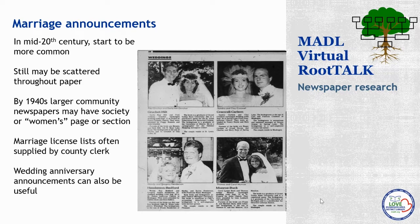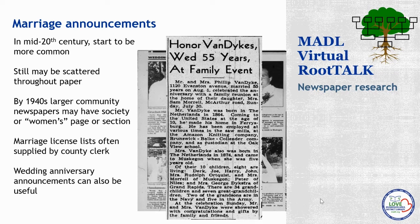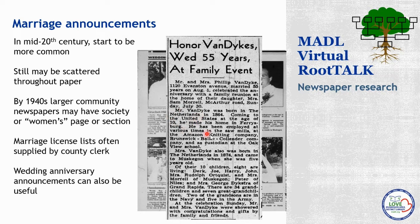Another interesting thing to look for when you're looking at marriage announcements is wedding anniversary announcements — they can be a great resource for family history research. Here's an example from the Muskegon Chronicle on August 1st, 1944, for a 55th anniversary — usually you see them for 25 or 50 years. We find out that Van Dyck celebrated 55 years of marriage on August 1st, so we can extrapolate back to when they got married. We find out that Mr. Van Dyck was born in the Netherlands and Mrs. Van Dyck was also born in the Netherlands, with birth years provided — so we'll be looking for European birth records. We also get names of children. Just fabulous information in these wedding anniversary announcements.